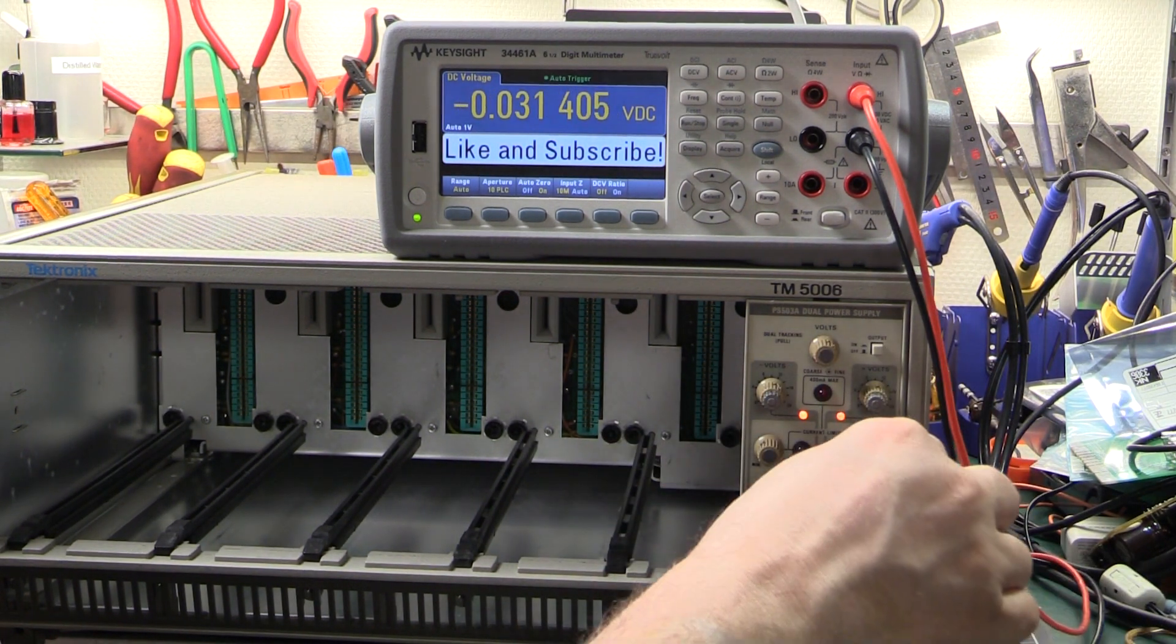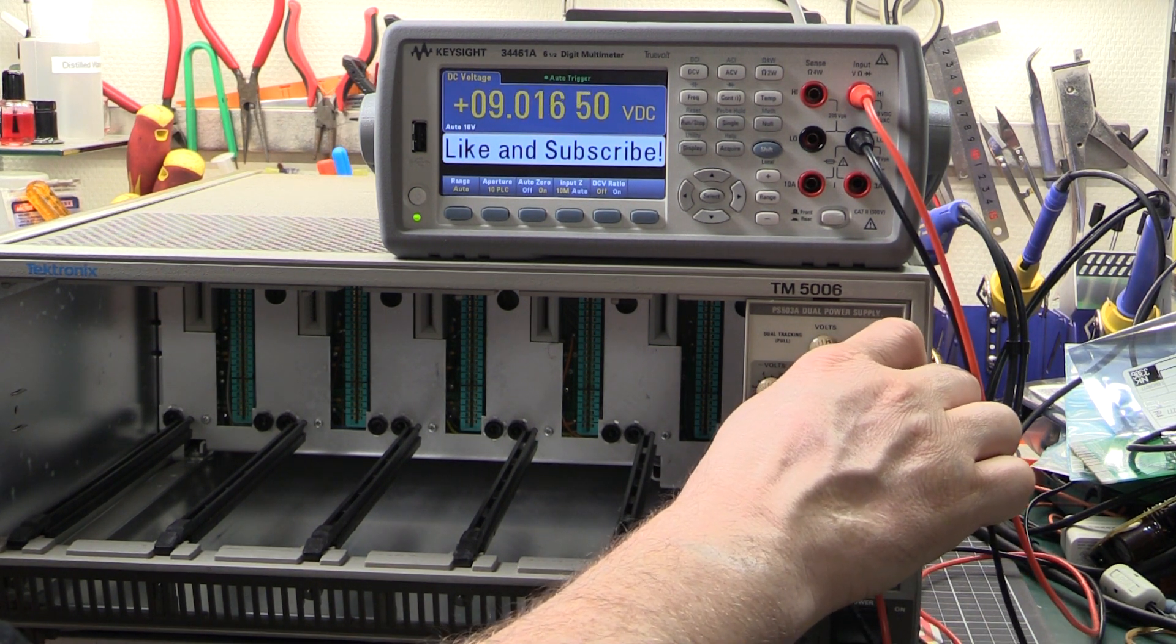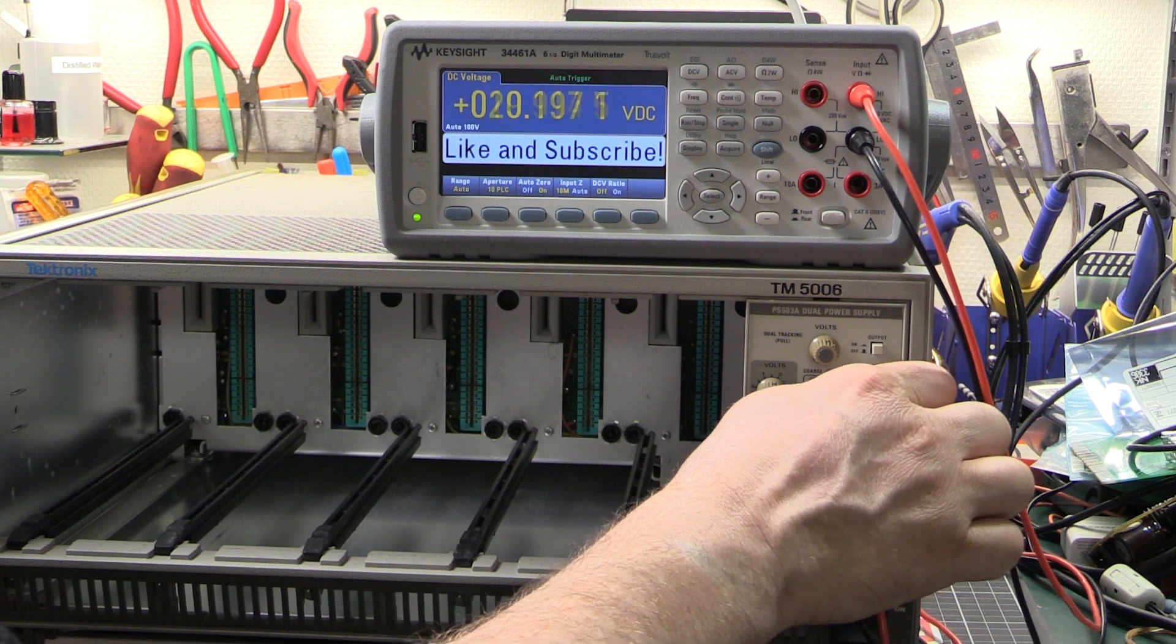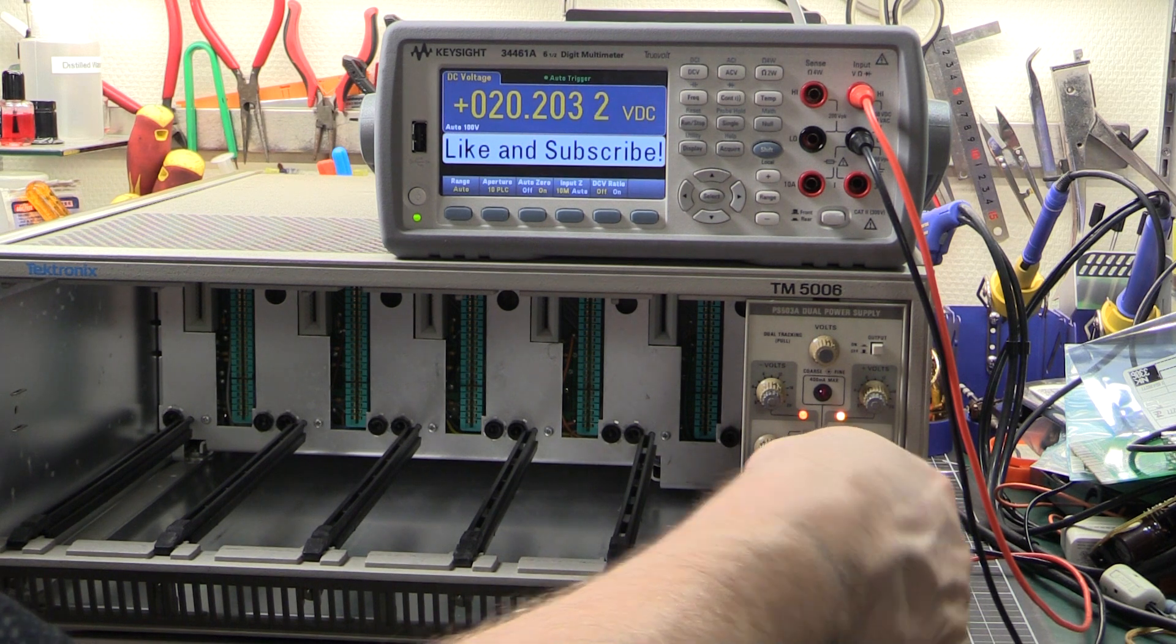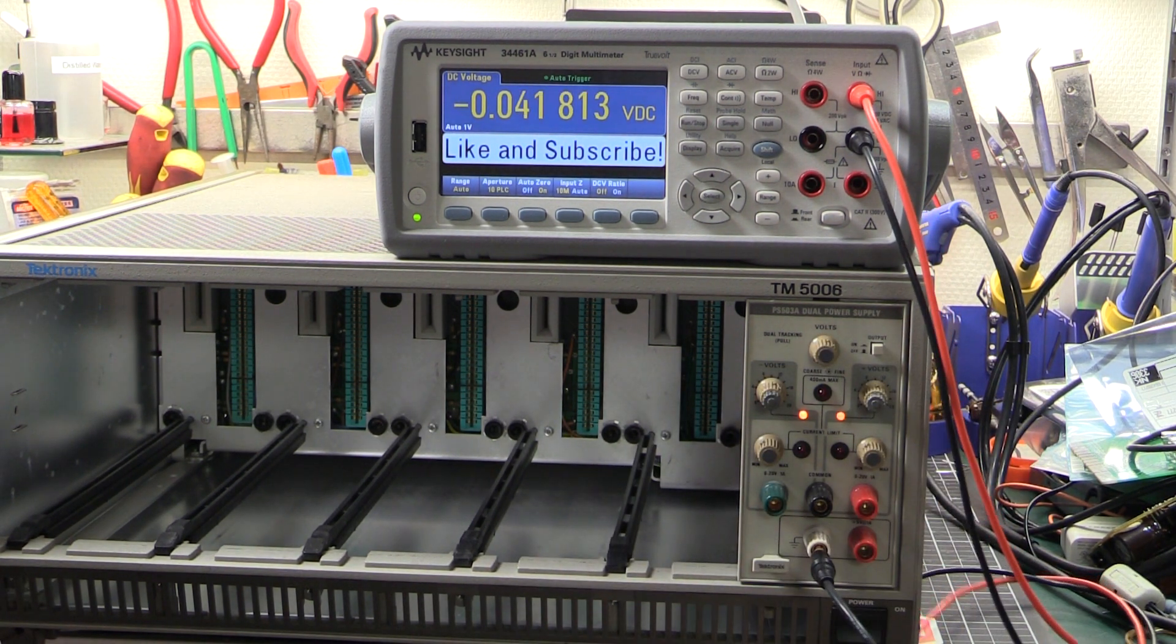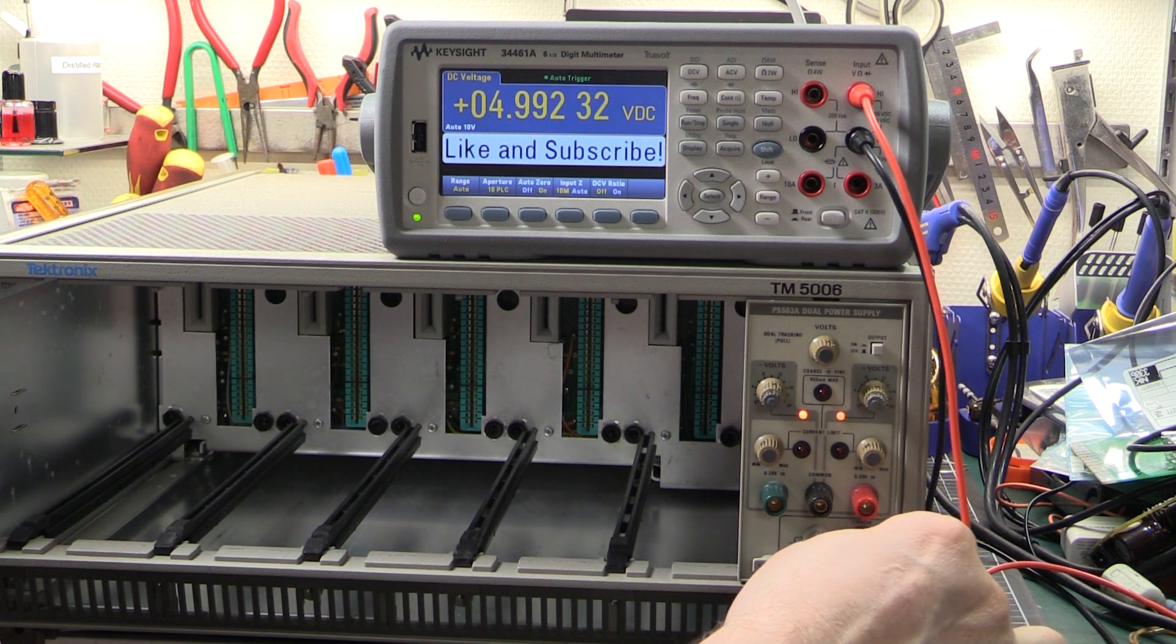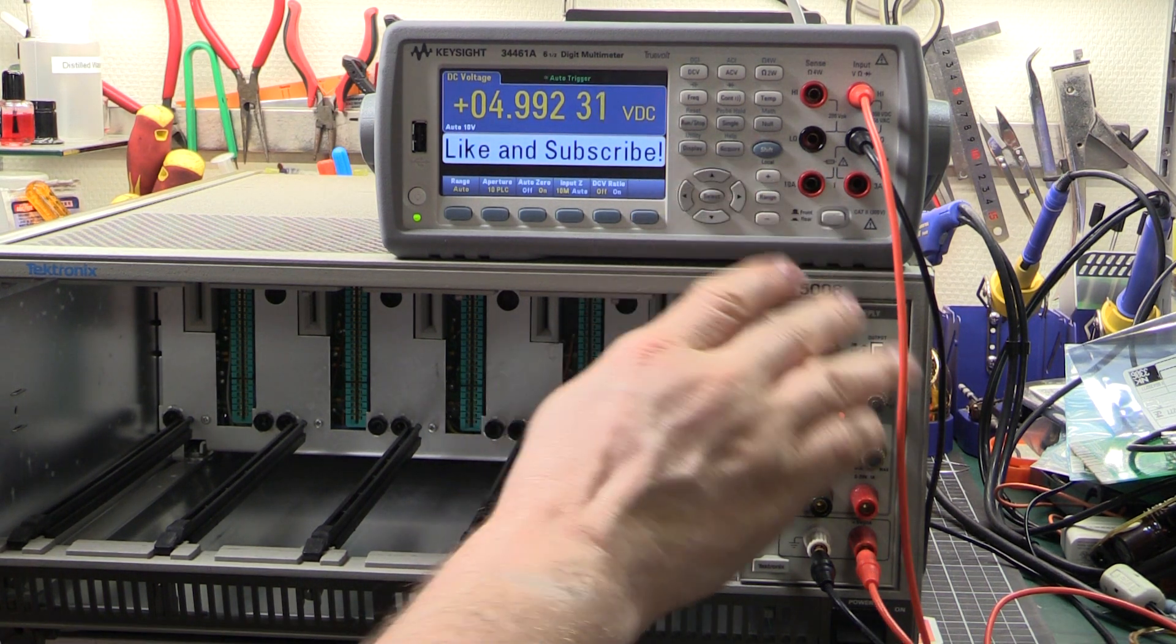So let's try the positive 20. And we turn that up. 3 volts, 5, 6, 9, 11, 15, 17, 18. Again, we'll turn the grey knob up, the fine tune. And we've got 20.2. Fantastic, spot on. And we'll turn that down. And for the 5 volts, we'll plug that in there. And we're getting 4.99. Basically spot on. This thing's working perfectly.